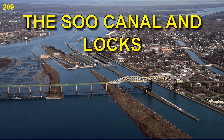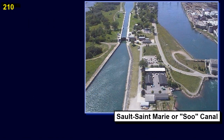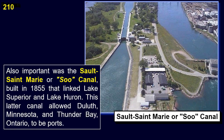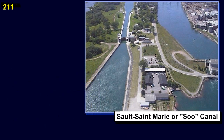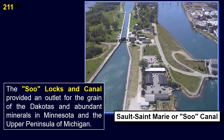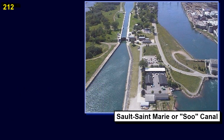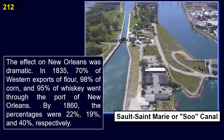The Soo Canal and locks: also important was the Sault Ste. Marie (Soo) Canal, built in 1855, that linked Lake Superior and Lake Huron. This latter canal allowed Duluth, Minnesota, and Thunder Bay, Ontario, to be ports. The Soo Locks and Canal provided an outlet for the grain of the Dakotas and abundant minerals in Minnesota and the Upper Peninsula of Michigan. The effect on New Orleans was dramatic: in 1835, 70% of western exports of flour, 98% of corn, and 95% of whiskey went through the port of New Orleans. By 1860, the percentages were 22%, 19%, and 40%, respectively.